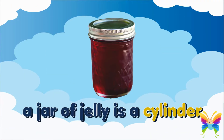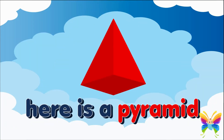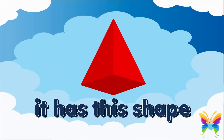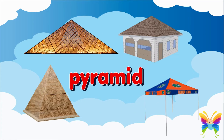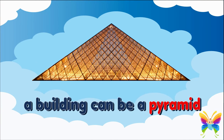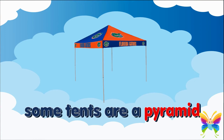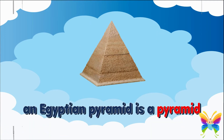A jar of jelly is a cylinder. Here is a pyramid. It has this shape. These are things that have the shape of a pyramid — you can see them every place. A building can be a pyramid, some tents are a pyramid, an Egyptian pyramid is a pyramid.